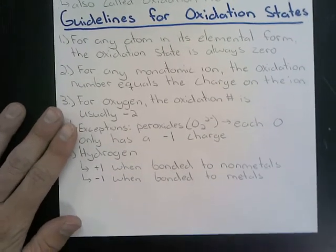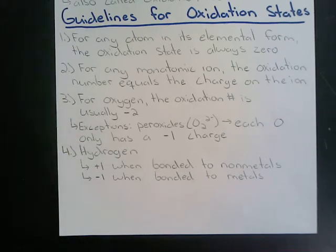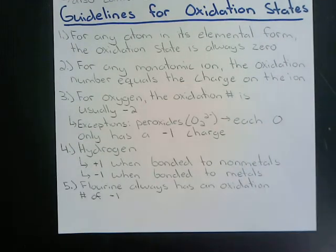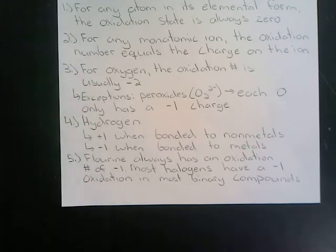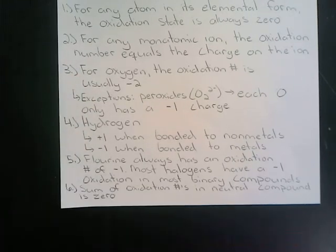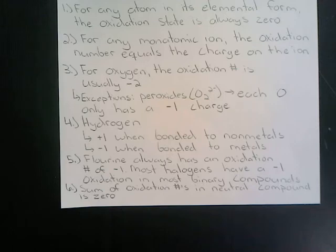For fluorine, the oxidation number is always negative one. Most other halogens also have a negative one charge in binary compounds. In a neutral compound, the sum of all oxidation numbers is zero. And the sum of oxidation numbers in polyatomic ions equals the charge of that ion.